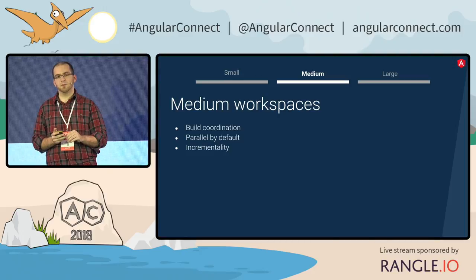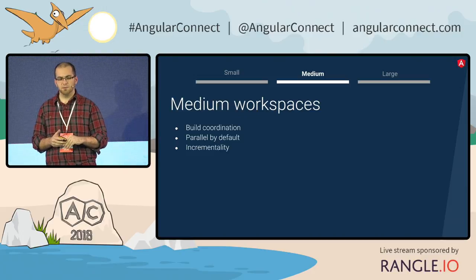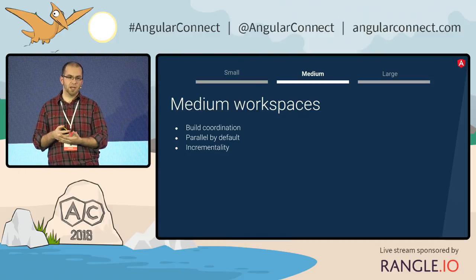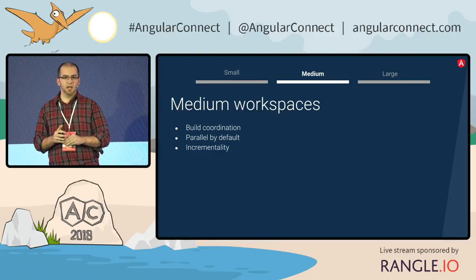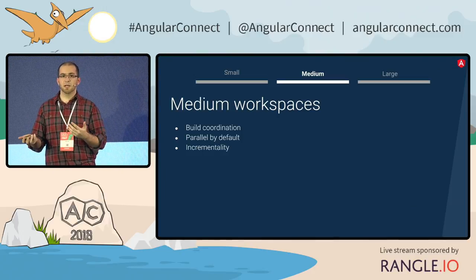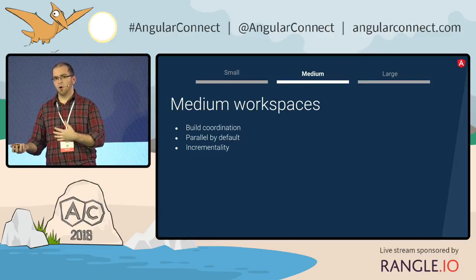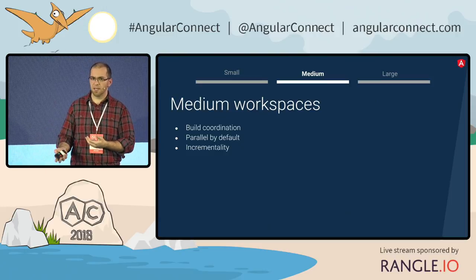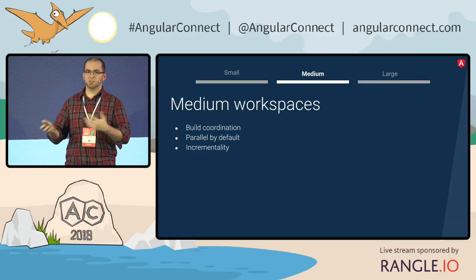In medium workspaces, we also have something called incrementality. The idea is that the time it takes to effect a change should be proportional to the change, not to the size of the whole project. For instance, if you're just changing a little part of your library and your application depends on your library, it's reasonable that both need to be rebuilt. But if you're just changing your application, maybe your library doesn't need to be rebuilt. Or even within your application, if you've just changed the global styles, why do you need to rebuild everything? Bazel can figure out what actually needs to be rebuilt and not just rebuild everything.